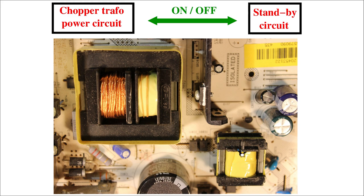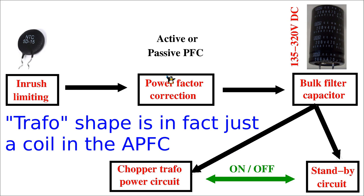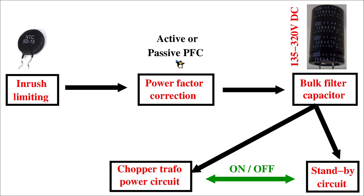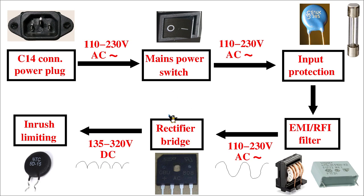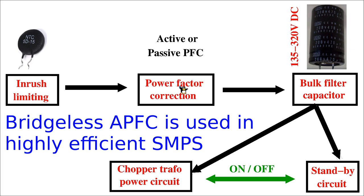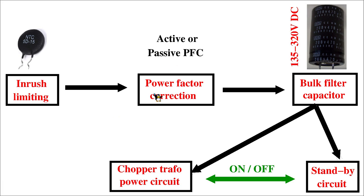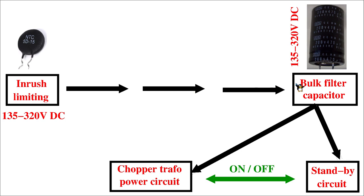I said 'almost sure' about the small transformer being the standby transformer because in some circuits there are components that look like transformers but actually function as coils in the active power factor correction circuit. The active PFC functionality is very complex, especially bridgeless active PFC without a standard bridge rectifier. Because of that, I am going to ignore active PFC and assume we are using an older power supply before the PFC standard was applied, going directly from inrush current limiting into the bulk filter capacitor. This simplifies the explanation considerably.